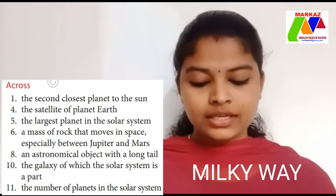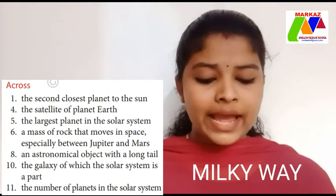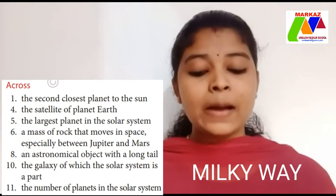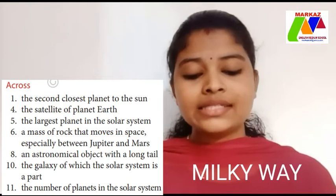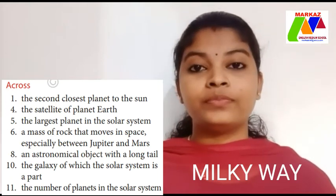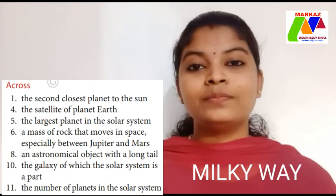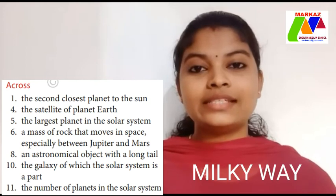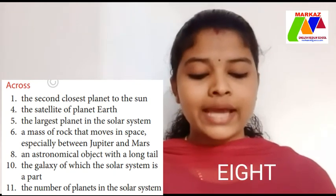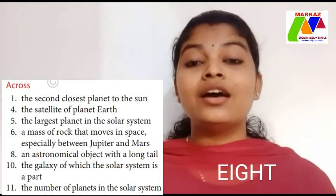Next, across eleven: the number of planets in the solar system. Anyone can guess? Yes — eight. The number of planets in the solar system is eight.